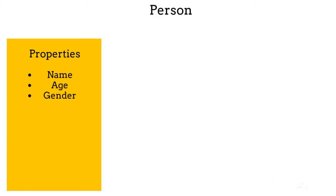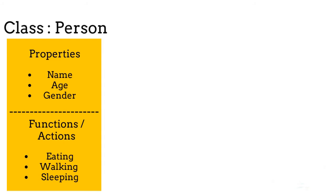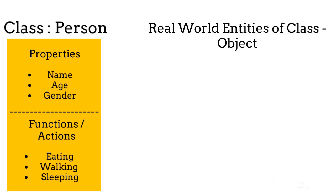A person has properties like name, age, and gender. Each person also performs some actions like eating, walking, and sleeping. The structure used to store these properties and functions is called a class. Now we have a class 'Person' which gives us a guideline that every person should have certain properties and perform some functions.